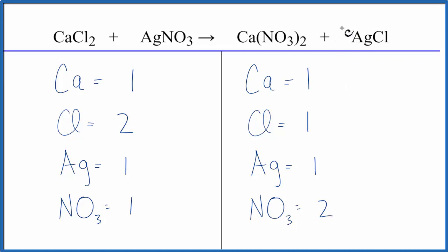If I put a two in front of the AgCl, that means I'll have one times two for the Ag, that would give me two of those, but for the Cls, I'd have one times two, and that would give me two Cls, so these would be balanced.